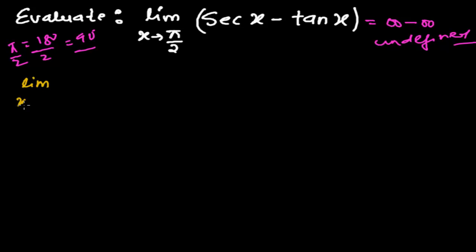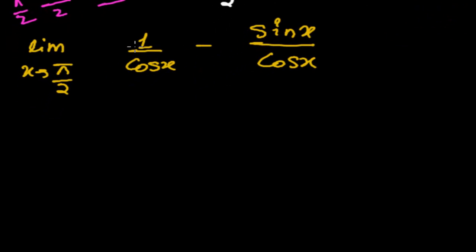So limit when x tends to π/2. Now this sec x, I can write 1 upon cos x. And tan x, I can write sin x upon cos x. We have learned this. Actually, cos x is just the reciprocal of sec x, and tan is actually the ratio of sin and cos.